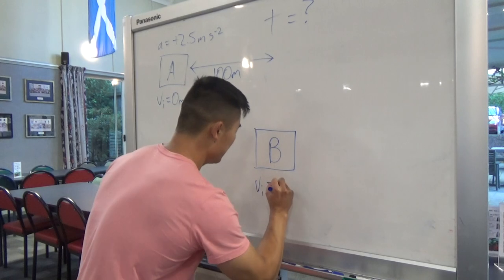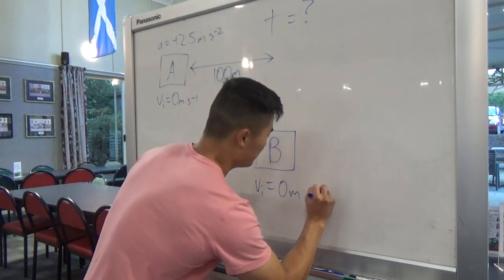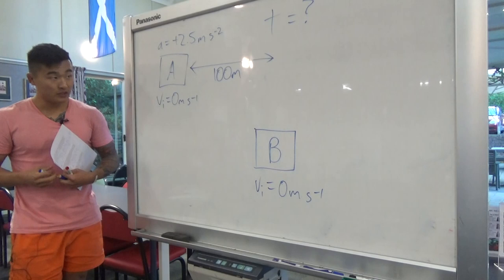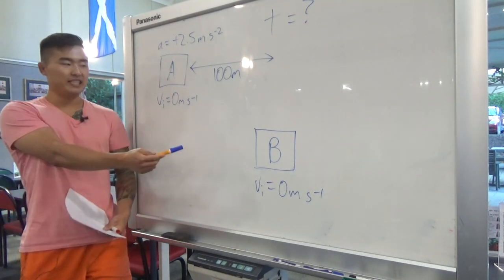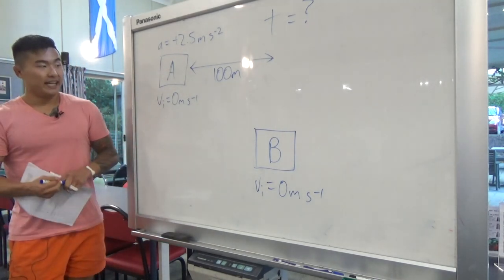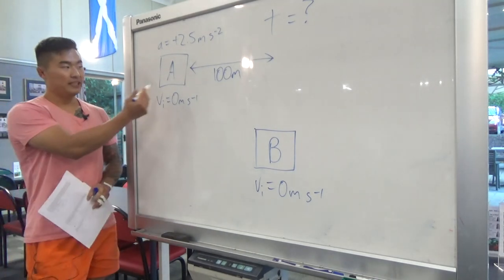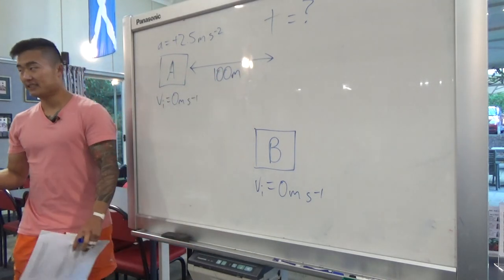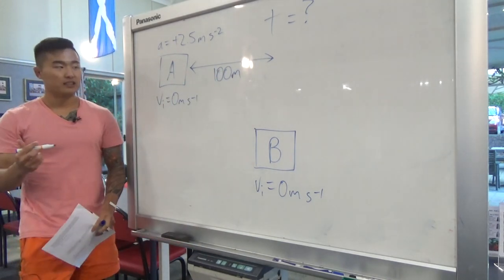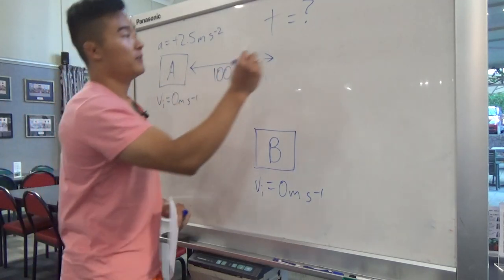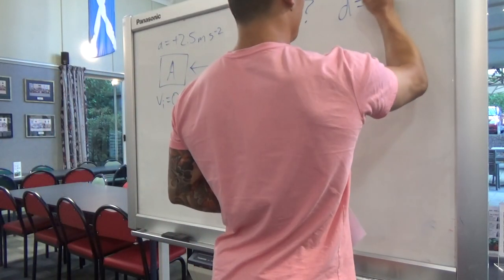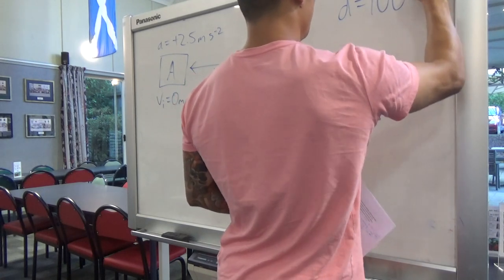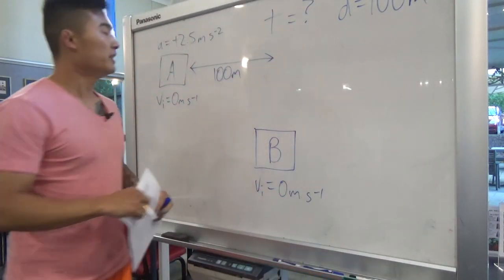That's going to make our calculations a lot easier. So if they're both stationary, we can just say: how long will it take car A to go a distance of 100 meters? Our variable d, or distance, is going to be 100 meters.